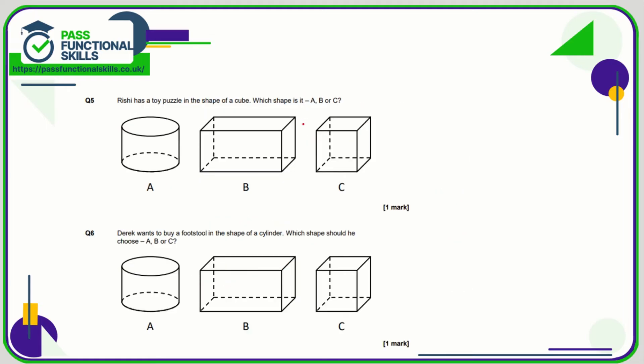Question number five. Rishi wants a toy puzzle in the shape of a cube, so that is C. Derek wants a footstool in the shape of a cylinder, so that is A.